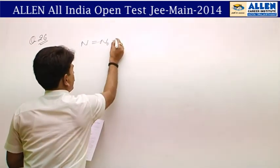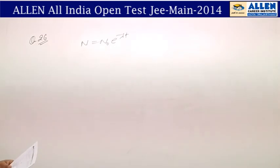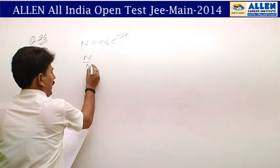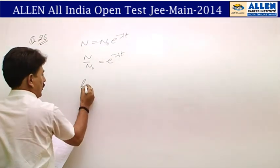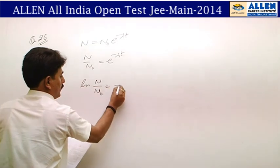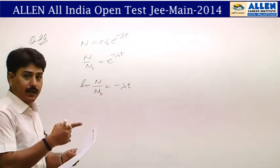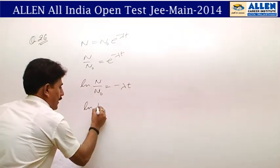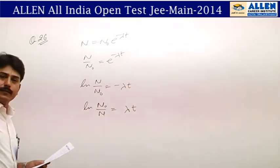We write the basic equation for radioactive decay: N = N₀ e^(−λt). Then N/N₀ = e^(−λt). Taking log on both sides, ln(N/N₀) = −λt. But the question asks for ln(N₀/N), so if we write ln(N₀/N) it becomes +λt.